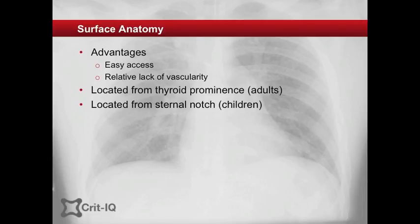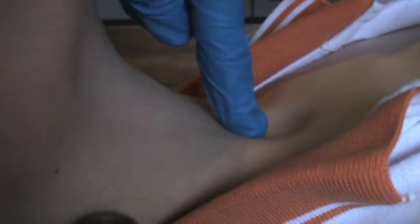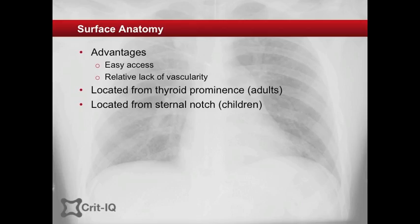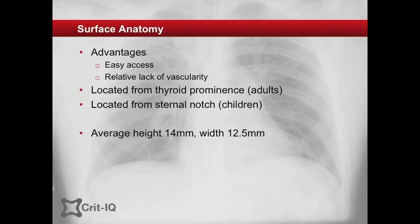This may be more difficult in children as the thyroid prominence is less well developed, and better located by starting at the suprasternal notch, palpating the tracheal rings until the prominent cricoid cartilage is felt. The size of the membrane varies with body size and in adults averages 14mm vertically and 12.5mm horizontally, and in most adults can accommodate a 6mm internal diameter tube.